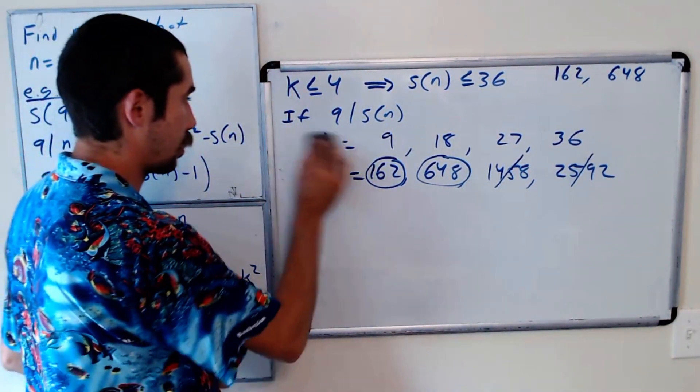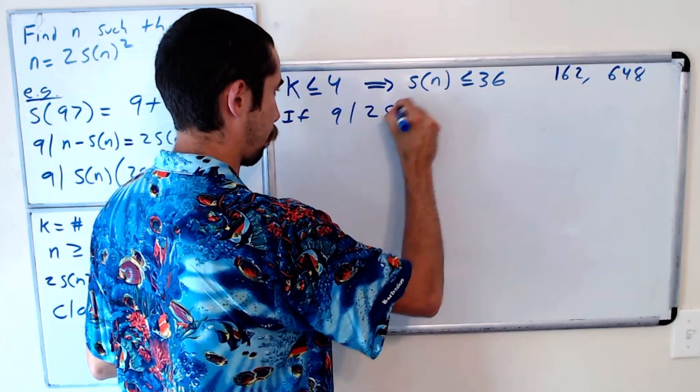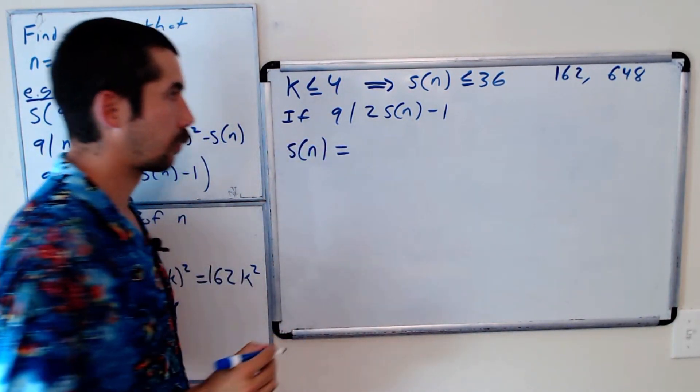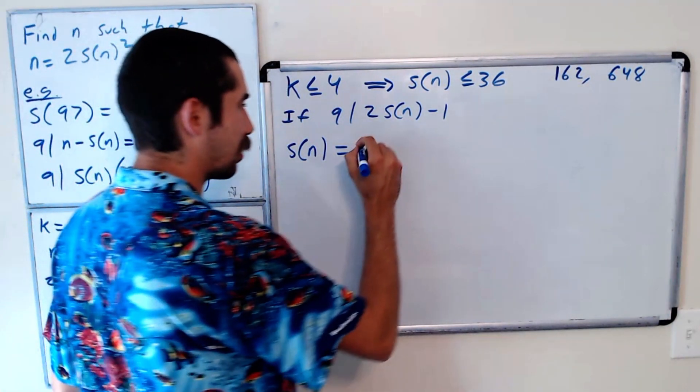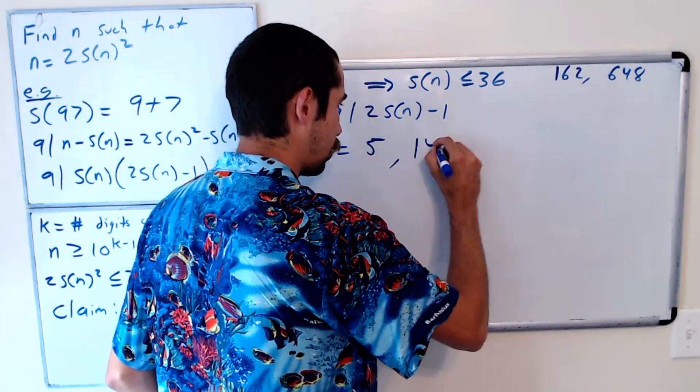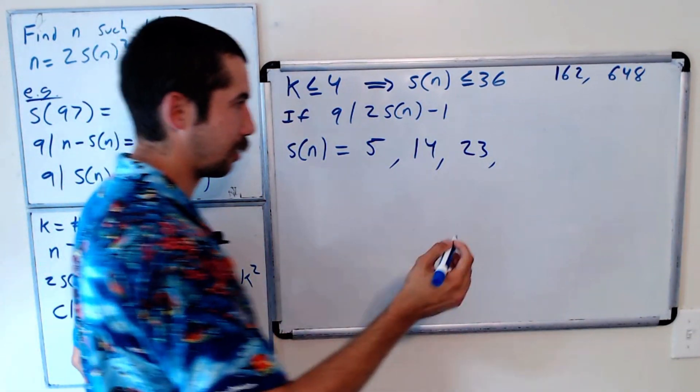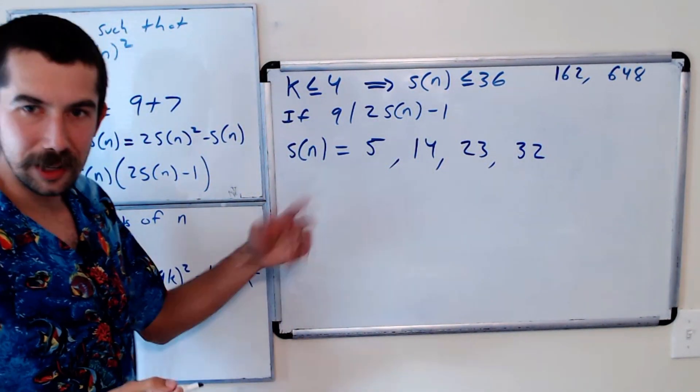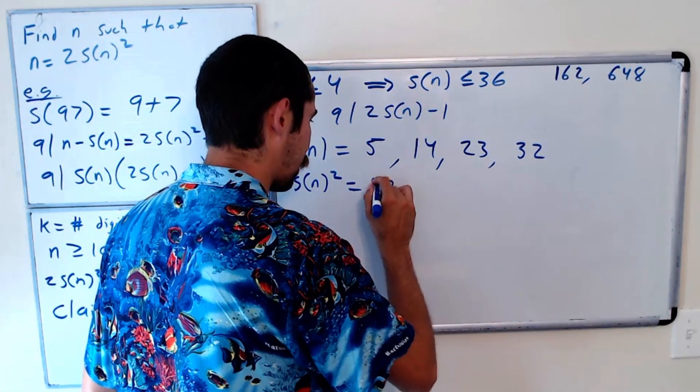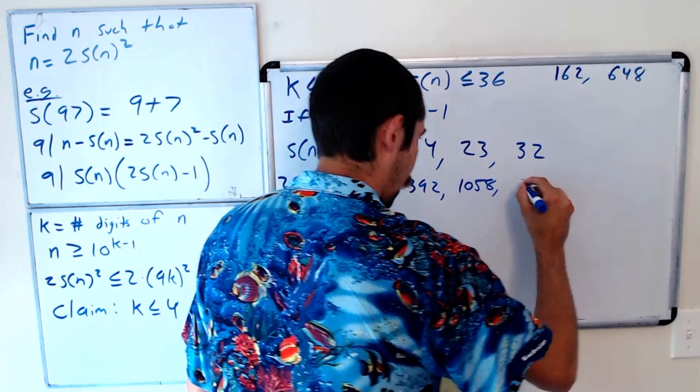Now we want to consider the case if 9 divides 2S(n) - 1. We just want to go through and check what the possible values of S(n) are. The biggest S(n) could be is 36, so there's not many that we have to check. The possible values of S(n) are 5 - that would be 2 times 5 minus 1 is 9. 14 would be the next one. Really, we're just going to keep adding 9. 23 is the next one, and then last is 32. We're going to do the same thing: square it, multiply it by 2. So 2S(n)² would be 50. Again, I worked these out off camera: 392, 1058, and 2048.